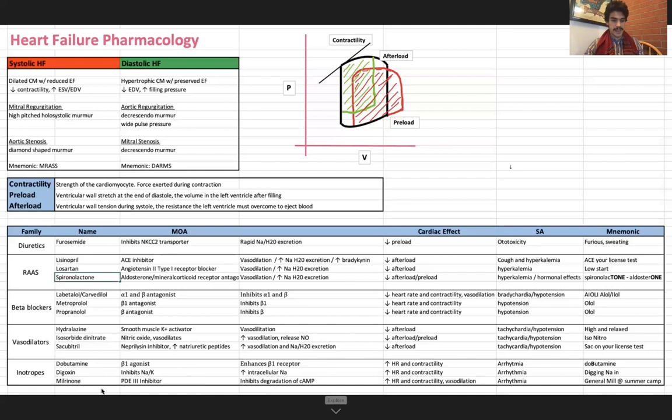And last but not least, we have milrinone, which is a phosphodiesterase inhibitor. The biggest thing that that does is that inhibits the degradation of cAMP. We know that cAMP is a huge part of contractility and muscle contraction. So if we inhibit cAMP, we actually end up directly increasing heart rate and contractility. And the only mnemonic that I could think of milrinone is mill, like General Mills cereal at summer camp. I love cereal at summer camp. But anyways, we're eating that cereal at summer camp. We're inhibiting the degradation of cAMP. We have increased cAMP, increased heart rate and contractility.